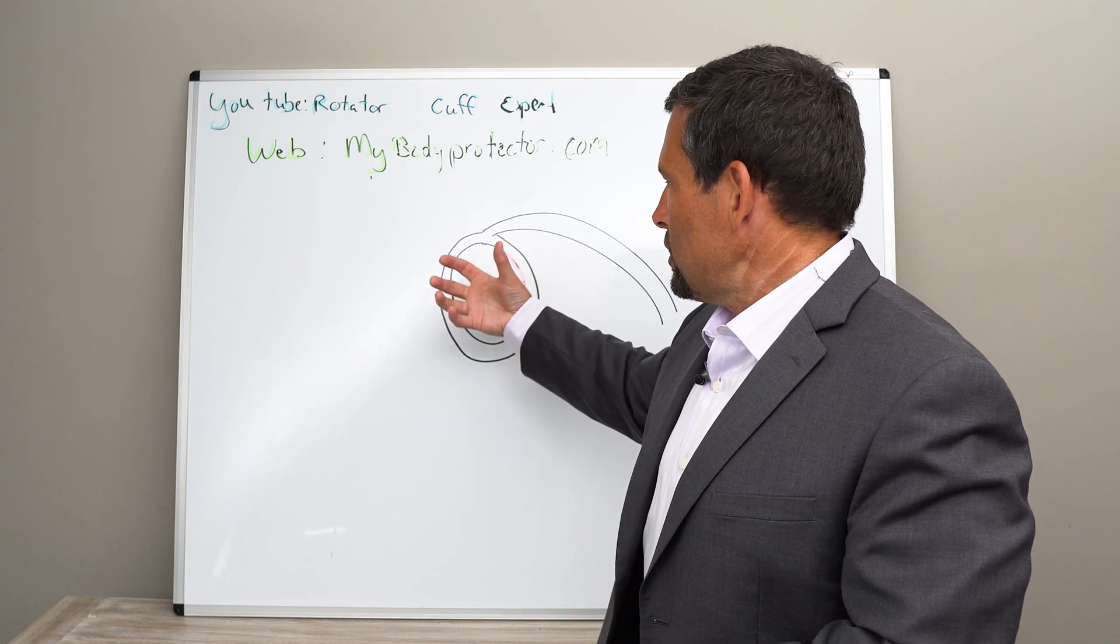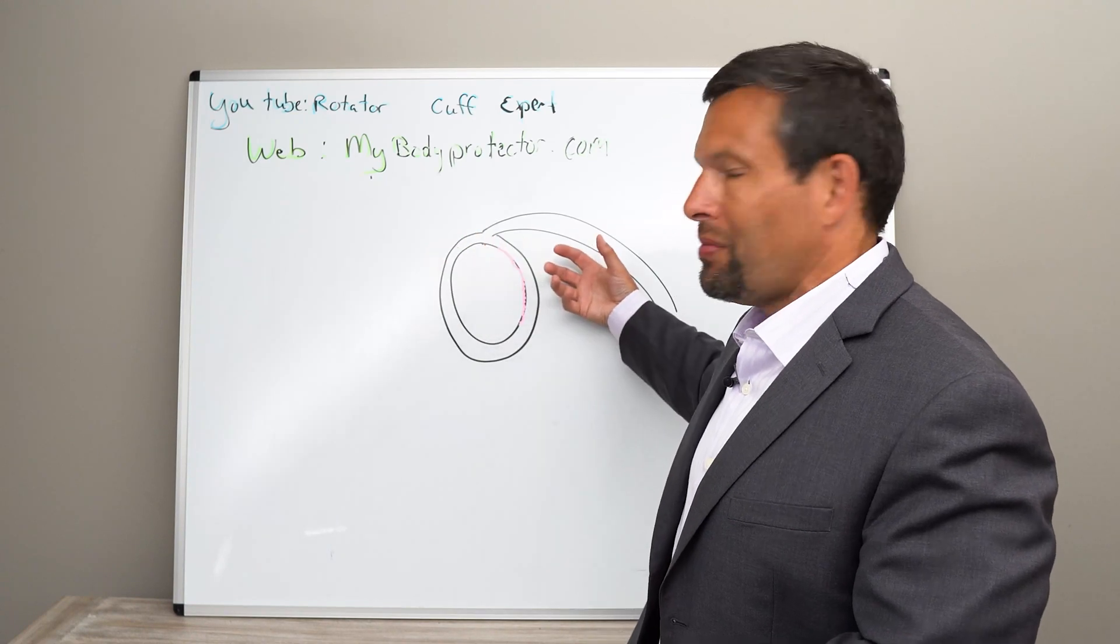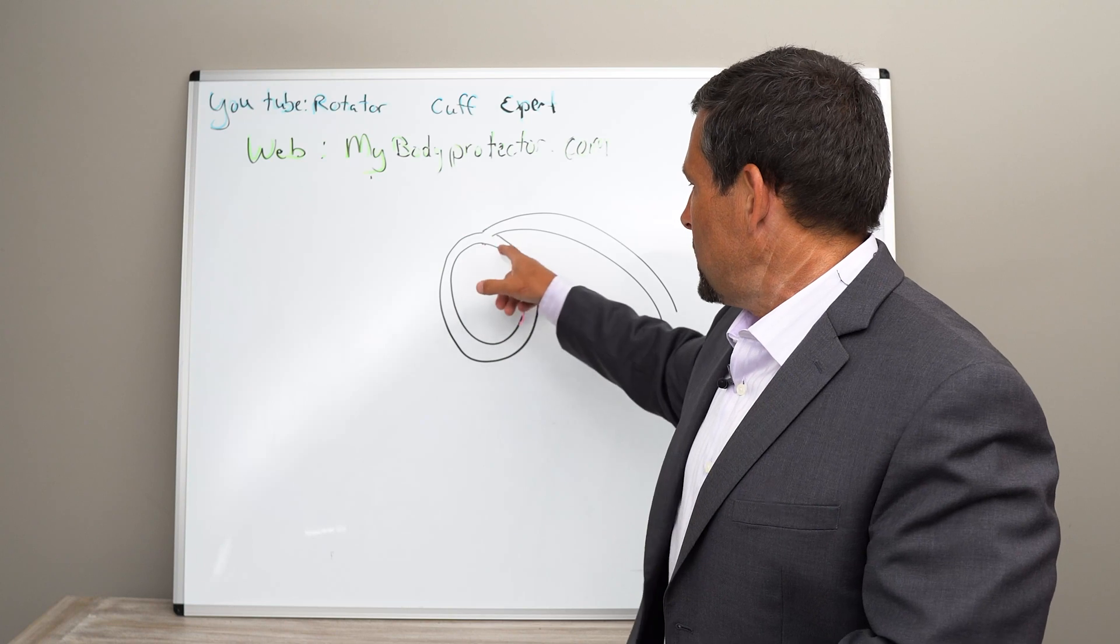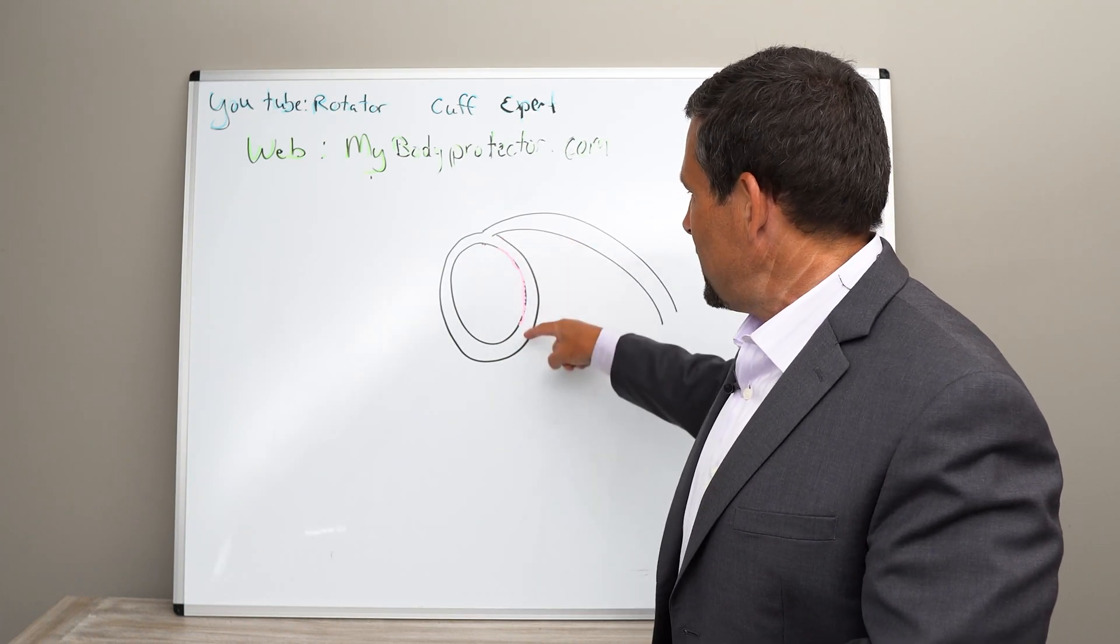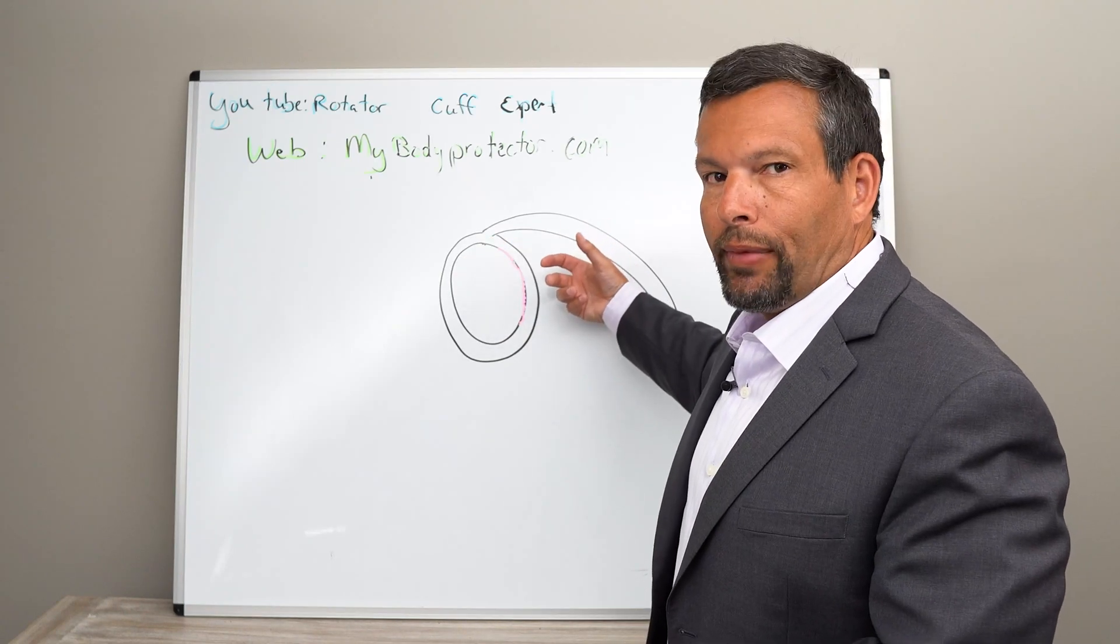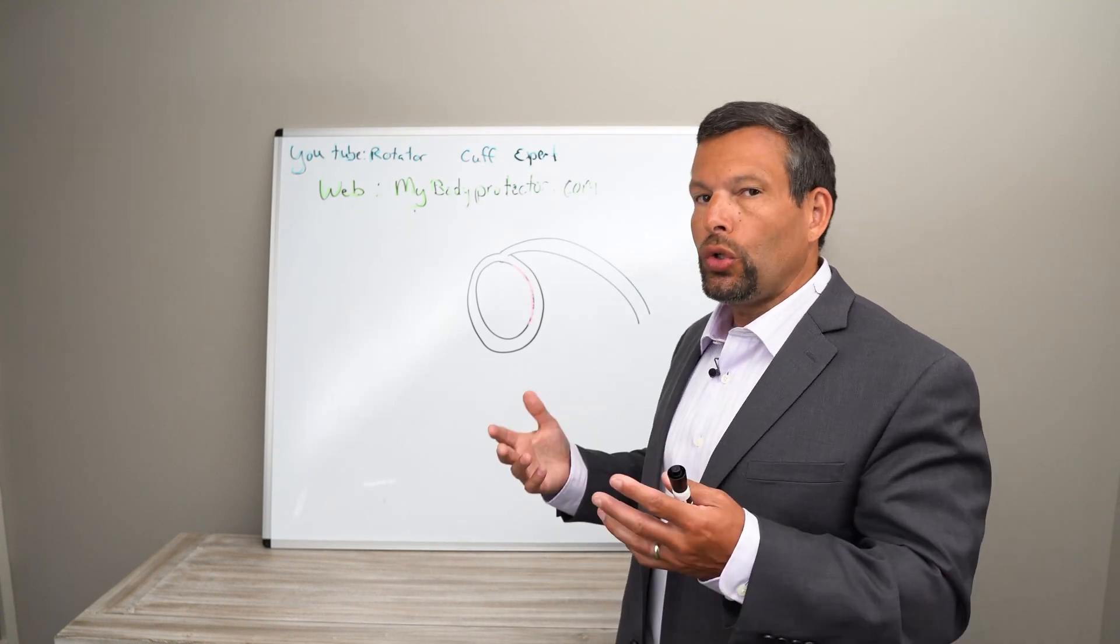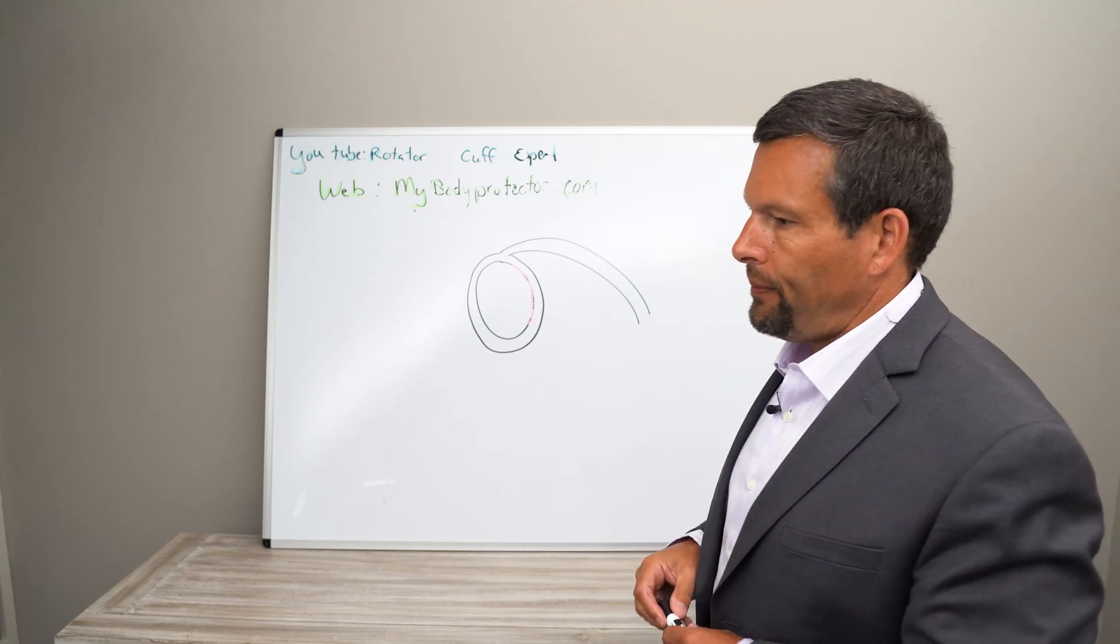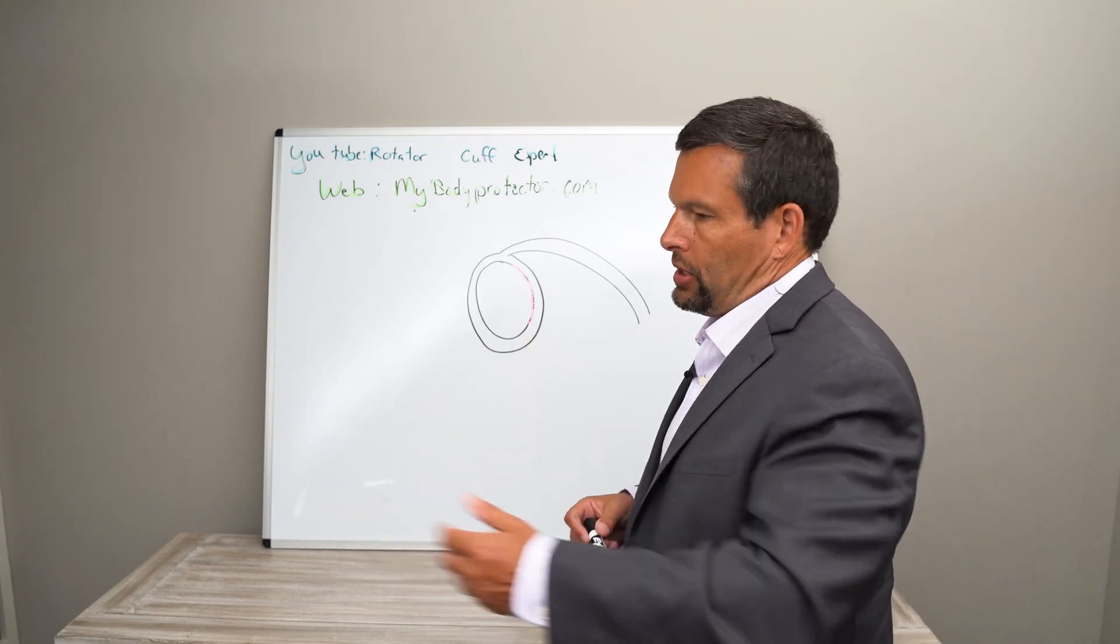If you dislocate your shoulder 99.9% of the time it comes out the front traumatically. When it comes out the front, it tears the front ligament between the labrum and the socket. You can't get it back in by yourself unless this has happened lots and lots of times and stuff is so loose that you can kind of shimmy it back in. But let's say this is the first time, 17-year-old football player dislocates the shoulder.